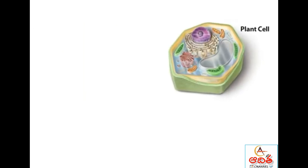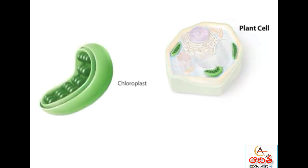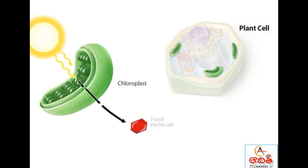An organelle called a chloroplast is found in the cells of plants and algae, but not in animal cells. Chloroplasts are the sites of photosynthesis, the process by which light energy is captured and converted into chemical energy. Chloroplasts allow plants to create the food that all animals depend on for survival.